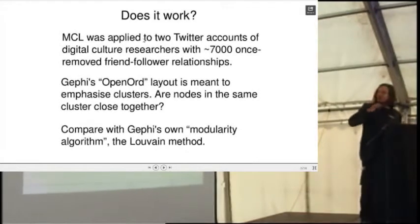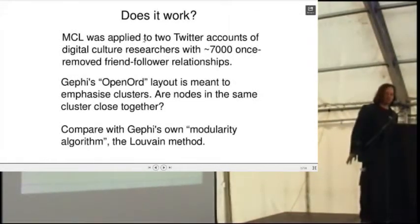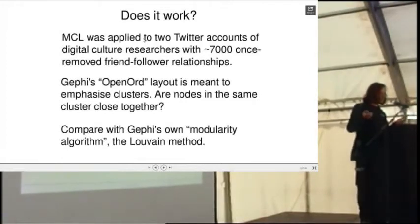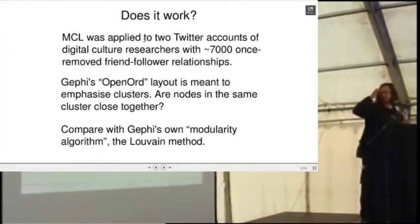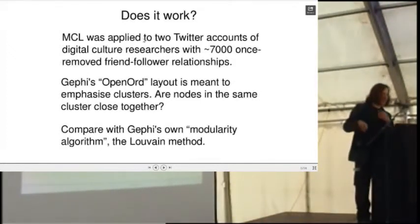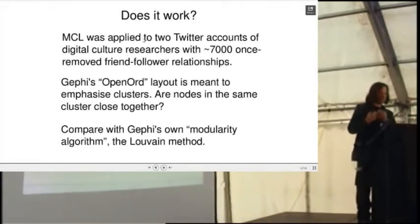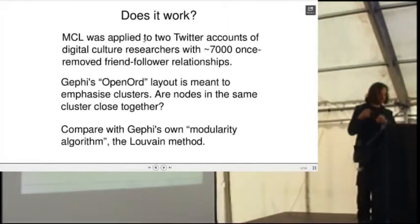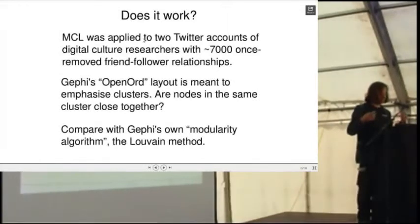Let's try it out. My learned colleagues — two of them — have about 7,000 once-removed friend-follow relationships, and we're going to apply this MCL algorithm to it. We're going to test it against the popular open-source network and graph analysis program Gephi. Gephi has lots of nice layout options, including one called OpenOrd, which is supposed to emphasize clustering, and its own clustering algorithm called the Louvain method. So we'll cluster with MCL, cluster with Louvain, and see what they look like in Gephi's layout that emphasizes clustering.